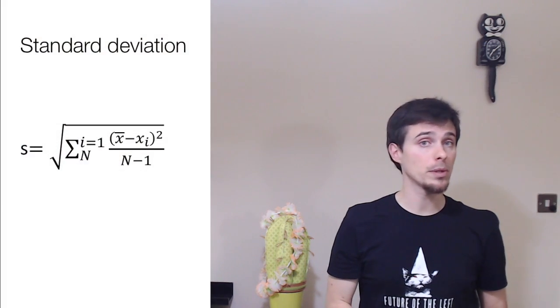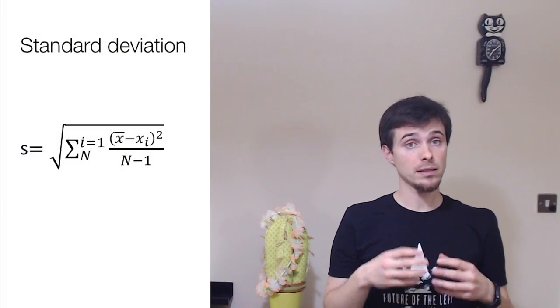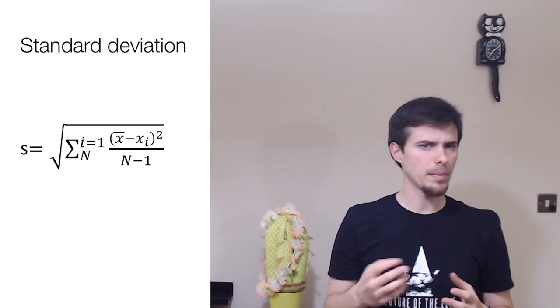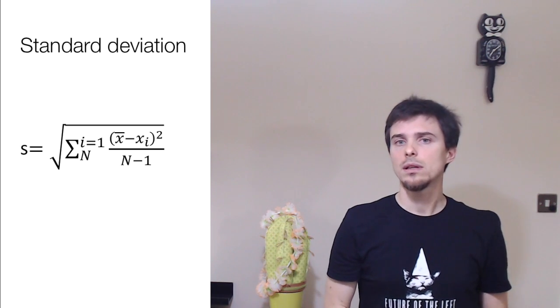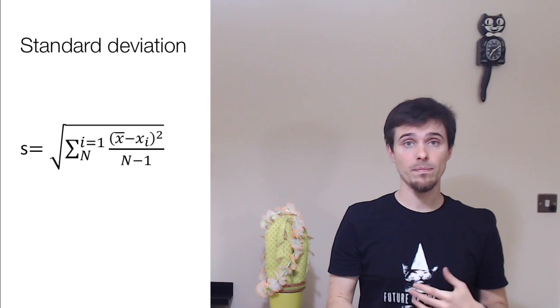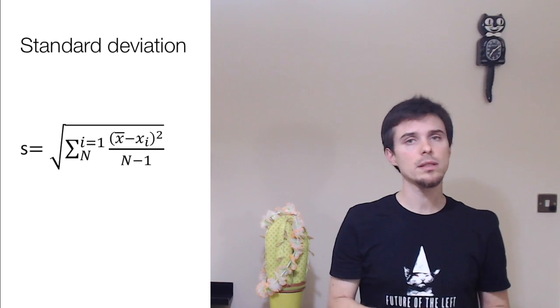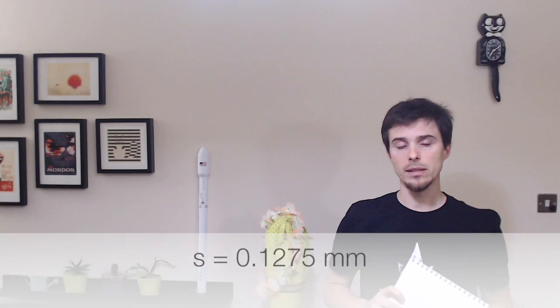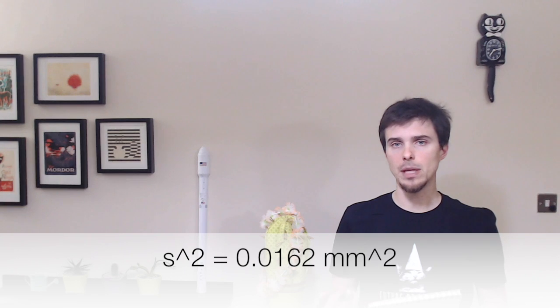The standard deviation is the most popular measure of dispersion. It's defined as the sum of the squared distances of each sample from the mean, divided by the sample size minus one, all under a square root. The square root brings the measure back to the same units as your mean, giving a good idea of how far from the mean your sample values are. In our case, the standard deviation is 0.1275 millimeters. The variance is the square of the standard deviation, and for us it's equal to 0.0162 millimeters squared.